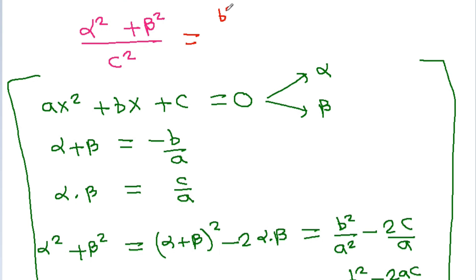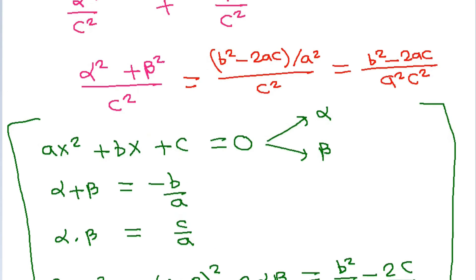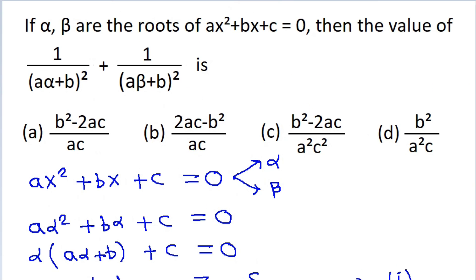Therefore the expression equals (b² - 2ac)/a² divided by c², which gives (b² - 2ac)/(a²c²). So the correct option is option C.